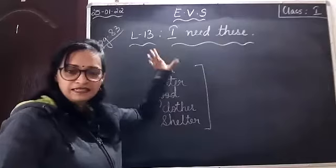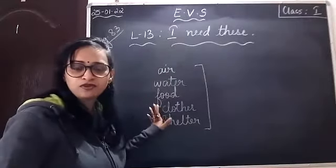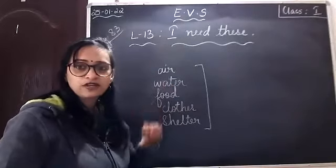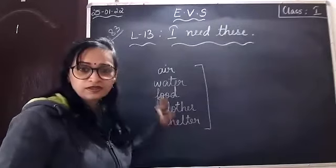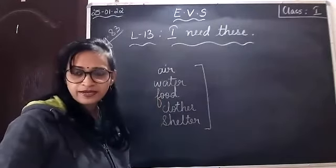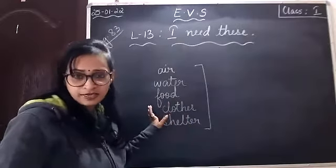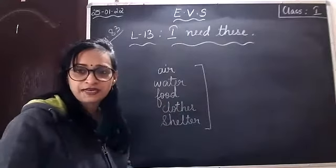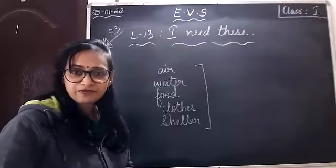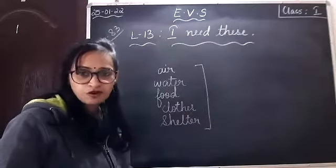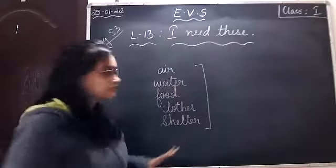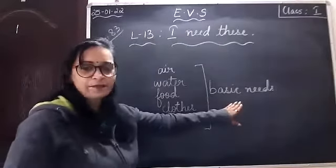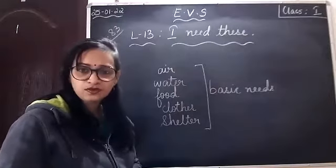In order for a person to survive, he needs these. Even if you do not have air, water or food, you cannot survive. You need air so that you can breathe. Whenever you're feeling thirsty, you need to drink water. You need food for energy. You need clothes to cover yourself — clothes protect you from so many things. And you also need shelter — it keeps you safe from wild animals, rain, dust. These are called our basic needs.